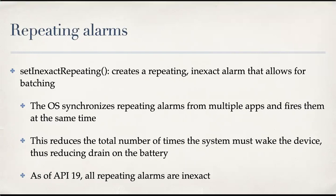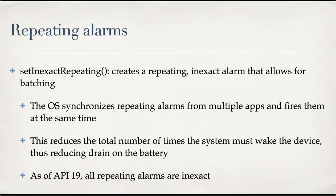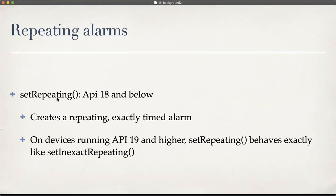For repeating alarms, you have setInexactRepeating(), which creates a repeating inexact alarm that allows for batching. The OS will synchronize all these repeating alarms together and fire them at the same time, conserving resources. As of API 19, all repeating alarms are inexact. In API 18 and below, setRepeating() creates a repeating exactly timed alarm. On API 19 and higher, setRepeating() has the same behavior as setInexactRepeating().